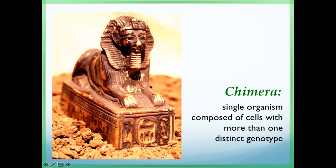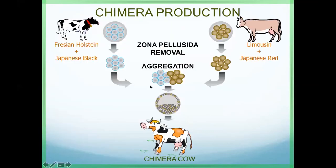We tried using embryos produced from a host oocyte fertilized using Japanese Black sperm (F1), and on the other side we have Limousine sperm also fertilizing a Japanese oocyte. We have two F1 embryos of different breeds. At the 8-cell stage embryo we remove the zona pellucida using enzyme and do the aggregation of the two embryos.